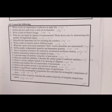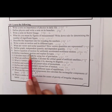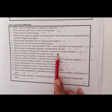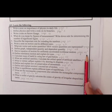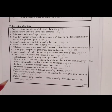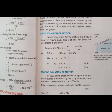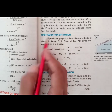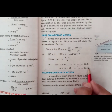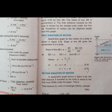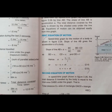Now we will move to question number 9: derive the equation of motion for uniformly accelerated rectilinear motion. Open up page number 45. Here is the first equation of motion and the diagram of the first equation of motion.